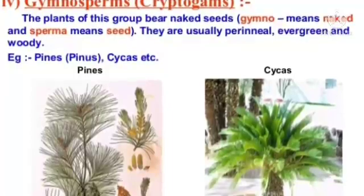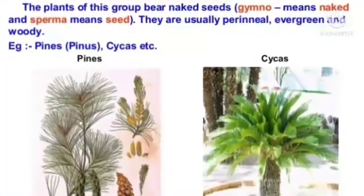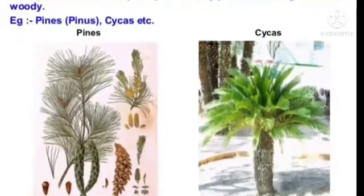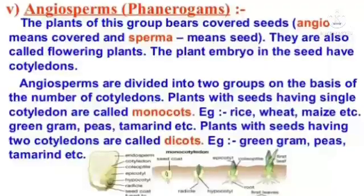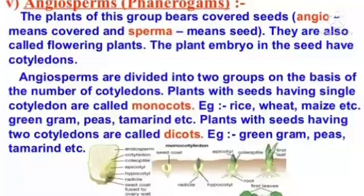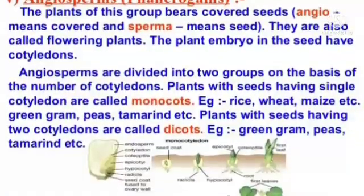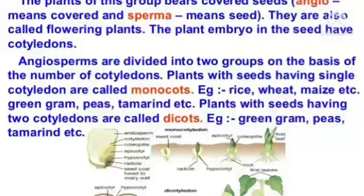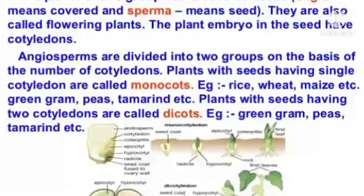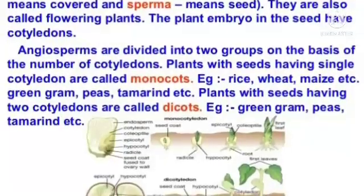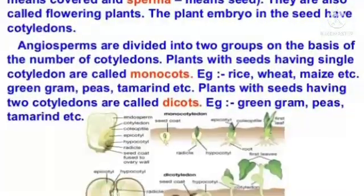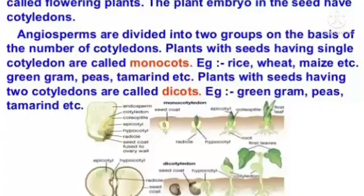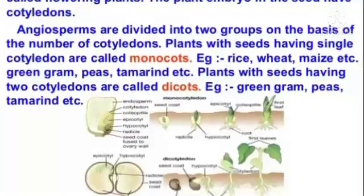Gymnosperms: The plants of this group bear naked seeds. They are usually perennial, evergreen, and woody. Examples: pines, Cycas, etc. Angiosperms, or flowering plants: the plants of this group bear enclosed seeds. The plant embryo in the seed has cotyledons. Angiosperms are divided into two groups: plants with seeds having a single cotyledon are called monocots (e.g., rice, wheat, maize), and plants with seeds having two cotyledons are called dicots (e.g., green gram, peas, tamarind).